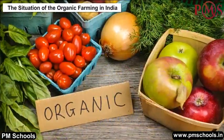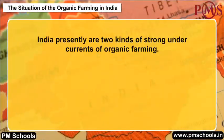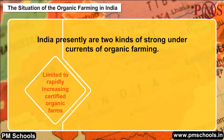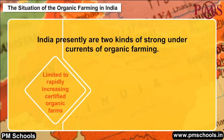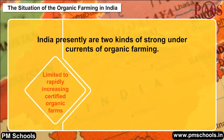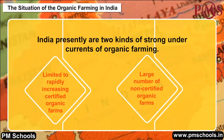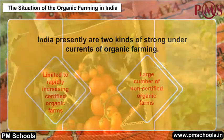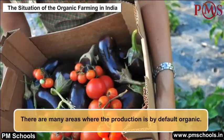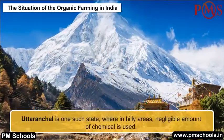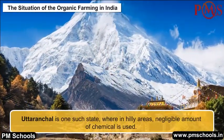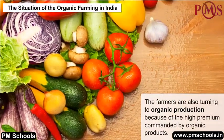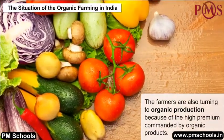The Situation of Organic Farming in India: What is seen in India presently are two kinds of strong undercurrents of organic farming — from limited to rapidly increasing certified organic farms mainly producing for a premium price in the domestic or export market, and a large number of non-certified organic farms which produce for their own households accessing local markets only. There are many areas where production is by default organic. Uttarakhand is one such state where in hilly areas a negligible amount of chemicals is used. Farmers are also turning to organic production because of the high premium commanded by organic products.